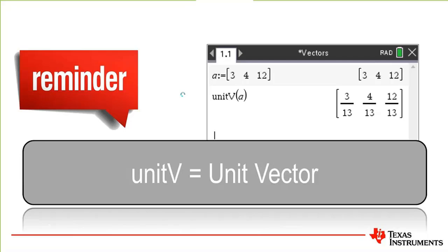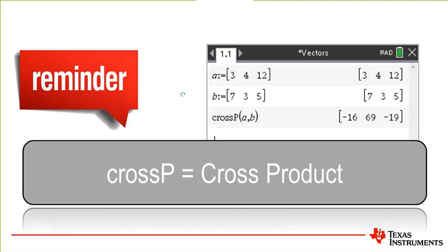For unit vectors, if it was a multiple choice question, tell students to just multiply through — it should be obvious that 1 over root 13 can come out the front. Cross product — that's not on the Victorian curriculum but is on the Queensland curriculum. It's important that students know what it is and have an interpretation of it.